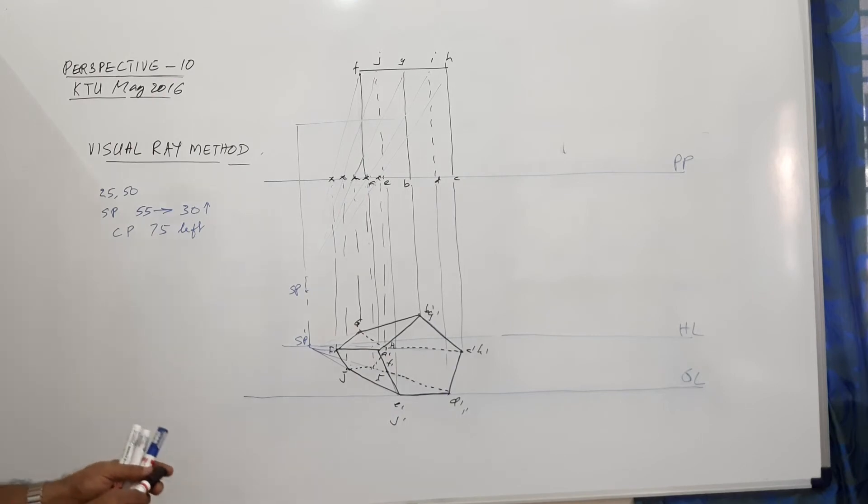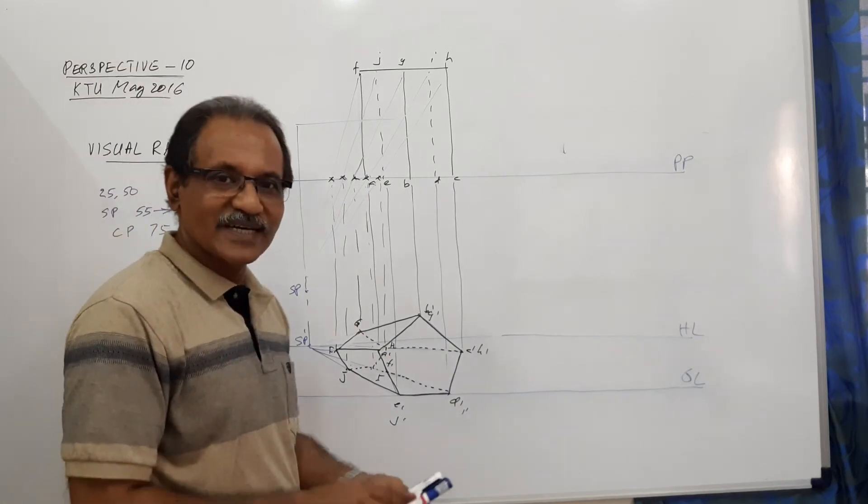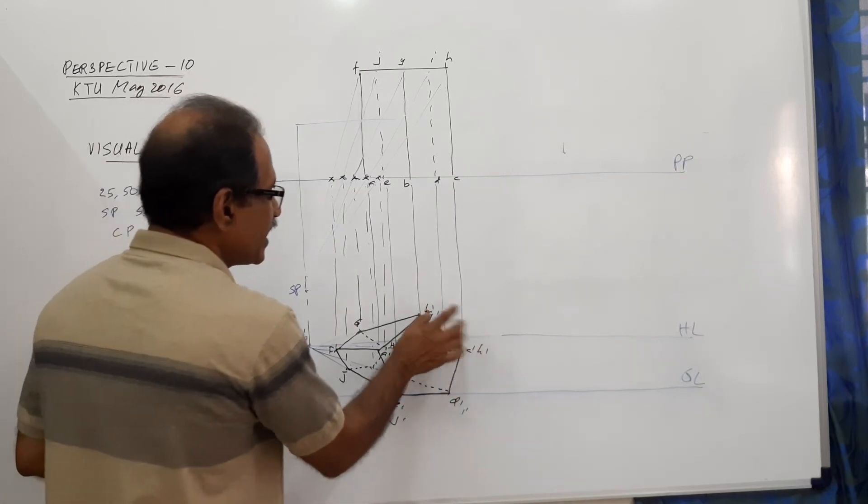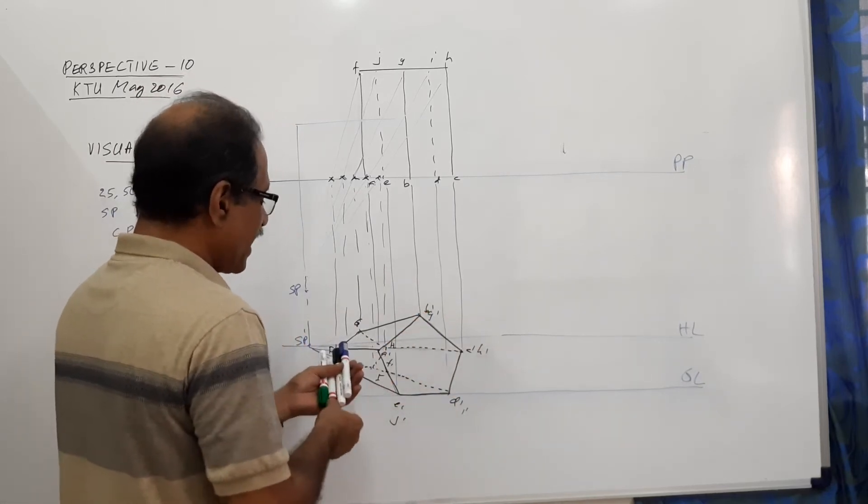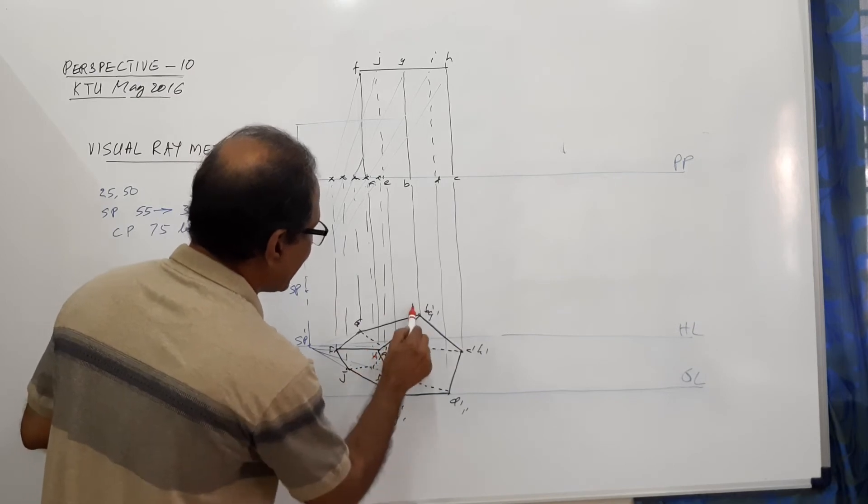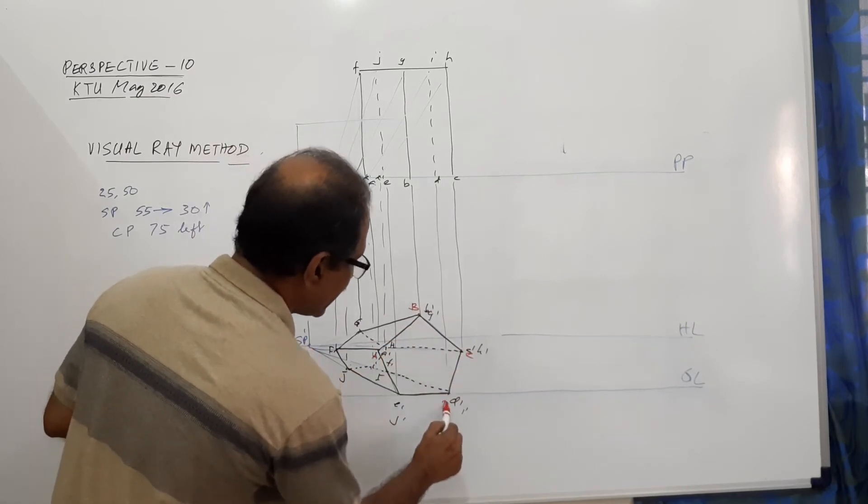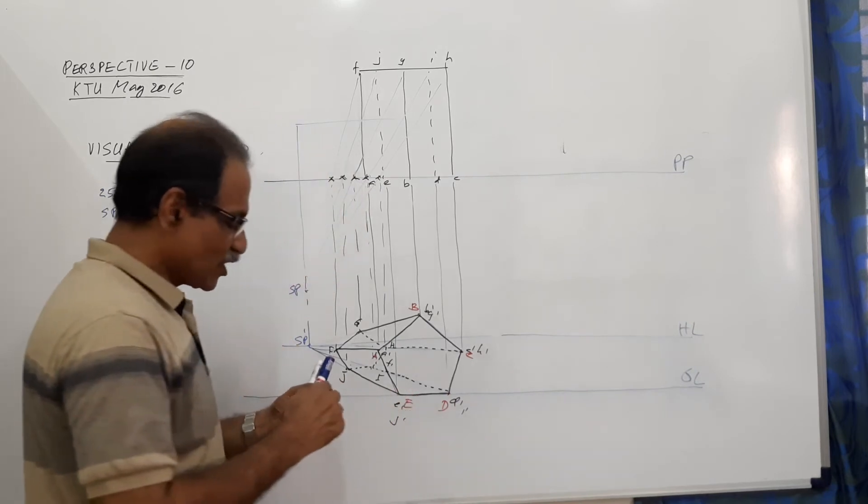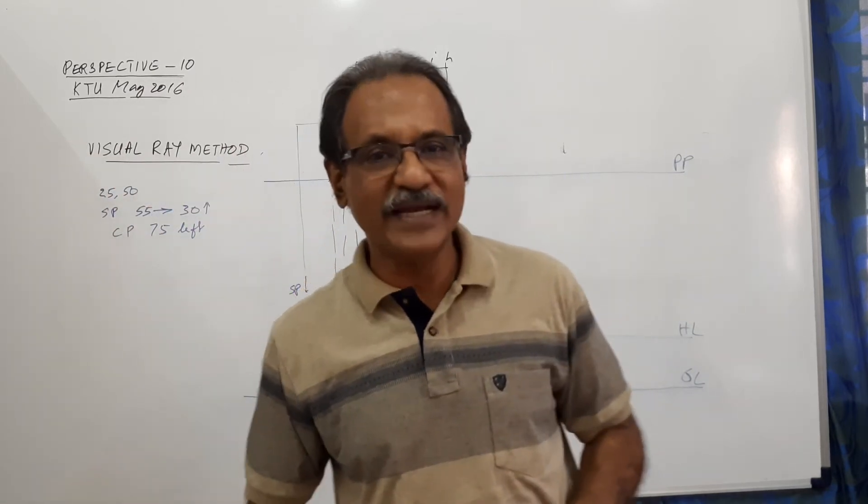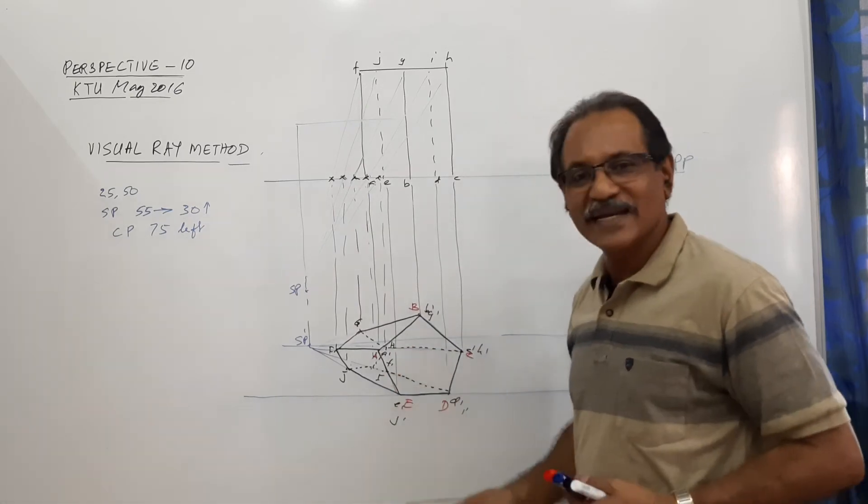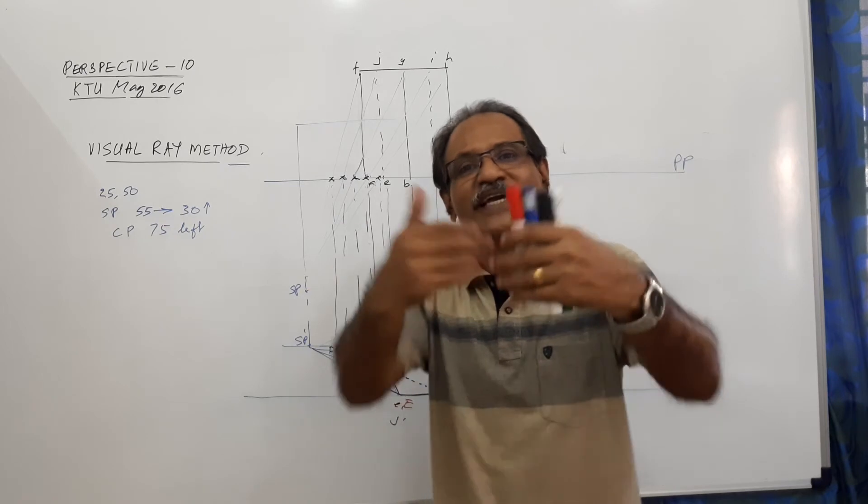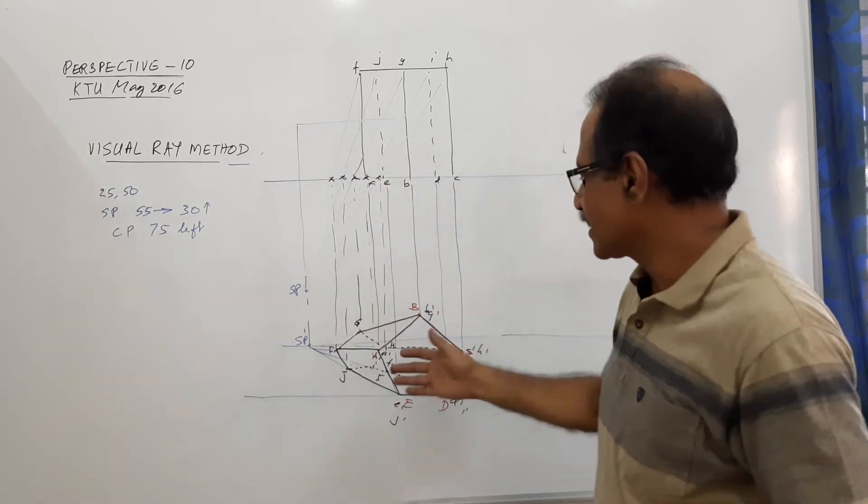You have got the pentagonal prism lying on the rectangular face with the front pentagonal face on PP. What does it mean? It means that instead of naming A dash, B dash, C dash, etc., you could have marked capital A, B, C, D, E because those points themselves finally become the perspective of the front pentagonal face. That would have been better than writing A dash, B dash, C dash, etc. But for concept, when you are drawing elevation, you have to mark A dash, B dash, that's why I do that.